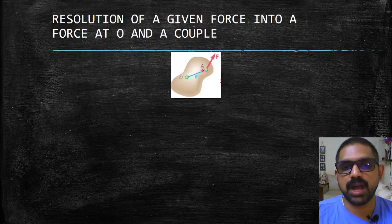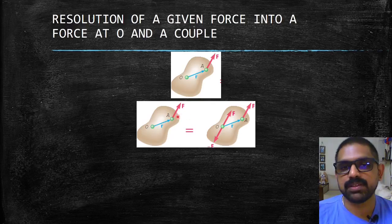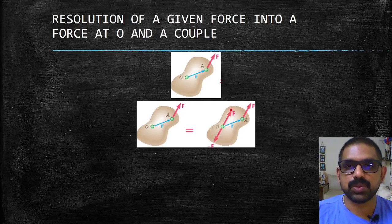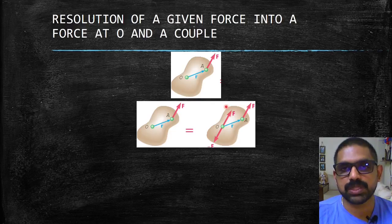Now if you see for this case when I have the same body with a force F here, I add two equal and opposite forces at point O: minus F and F. The interesting thing is that it will not affect the state of the body. If it is in equilibrium, it will remain in equilibrium because we have added two equal and opposite forces at the same point.